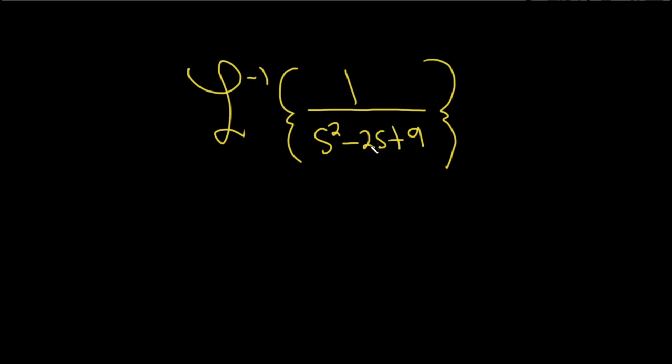So let's try to complete the square. You have s squared minus 2s plus 9. When we complete the square, we focus on these terms. We take the coefficient of s, which is negative 2, divide it by 2 and square it. That's going to give us negative 1 squared, which is 1.